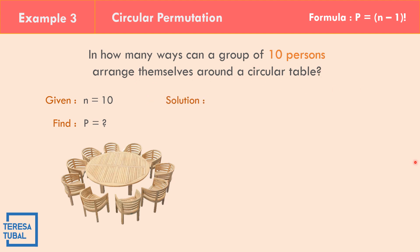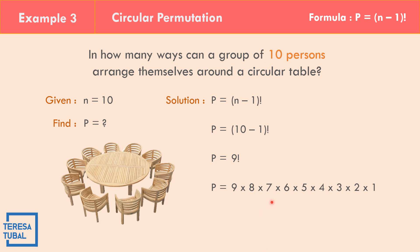Using the circular permutation formula P equals (n minus 1) factorial, with n equals 10, we get P equals (10 minus 1) factorial, which equals 9 factorial. The equivalent of 9 factorial is 9 times 8 times 7 times 6 times 5 times 4 times 3 times 2 times 1. Multiplying all those numbers gives P equals 362,880 ways for 10 persons to arrange themselves around a round table.